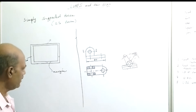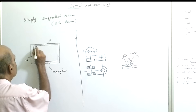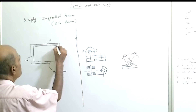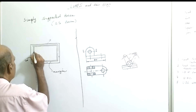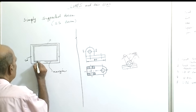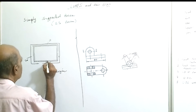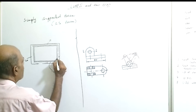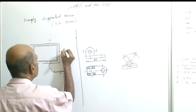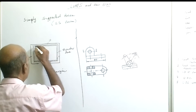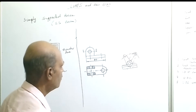The margin line is generally made using a thick continuous line. Next, border lines are drawn using rectangular boxes. In actual sheets, border lines are drawn after the margin line, and rectangular boxes are formed. Drawing is made inside this area, and the title block is placed here.